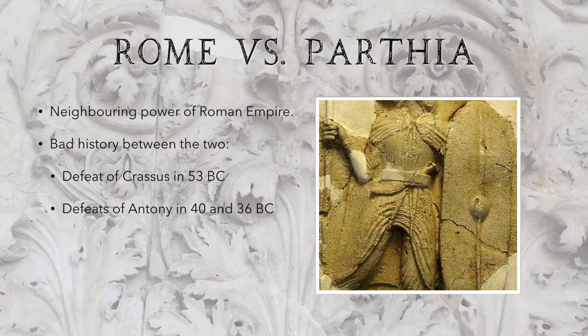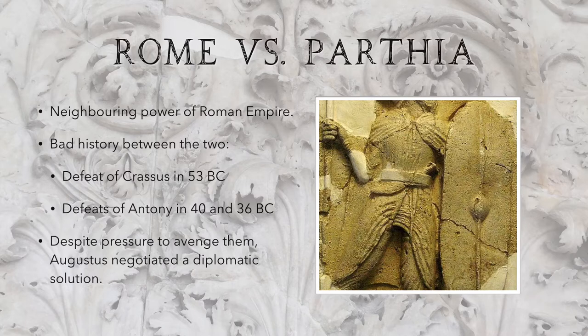Antony's praetor, or second-in-command, Decidius Saxa, was defeated by the Parthians in 40 BC. Antony also suffered some major losses in 36 BC and again lost some legionary standards. So as you can imagine, there was a lot of pressure to avenge all these losses and get back these standards.